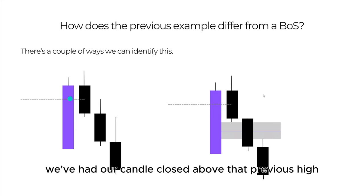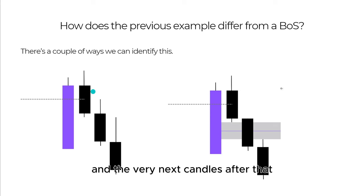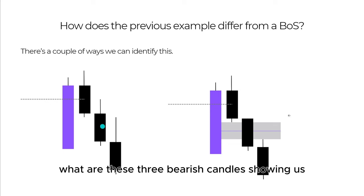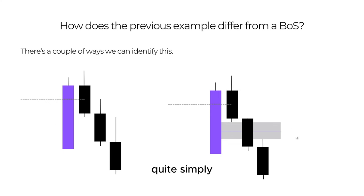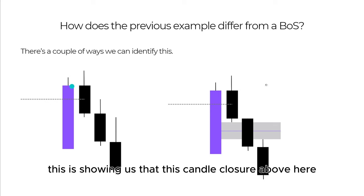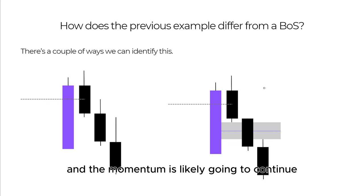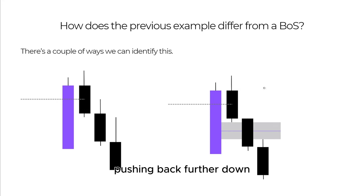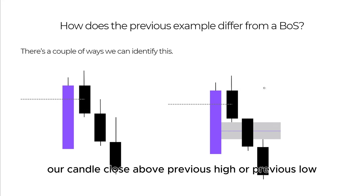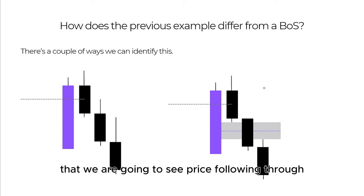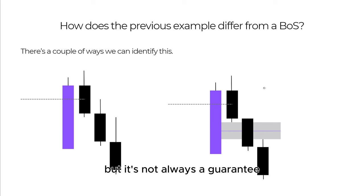Just like the previous slide, we've had our candle close above that previous high, and the very next candles after that show steady bearish momentum pushing further down. What are these three bearish candles showing us? Quite simply, this is showing us that this candle closure above here cannot be sustained and the momentum is likely going to continue pushing back further down. A candle close above a previous high or low is a strong indication of price following through, but it's not always a guarantee.